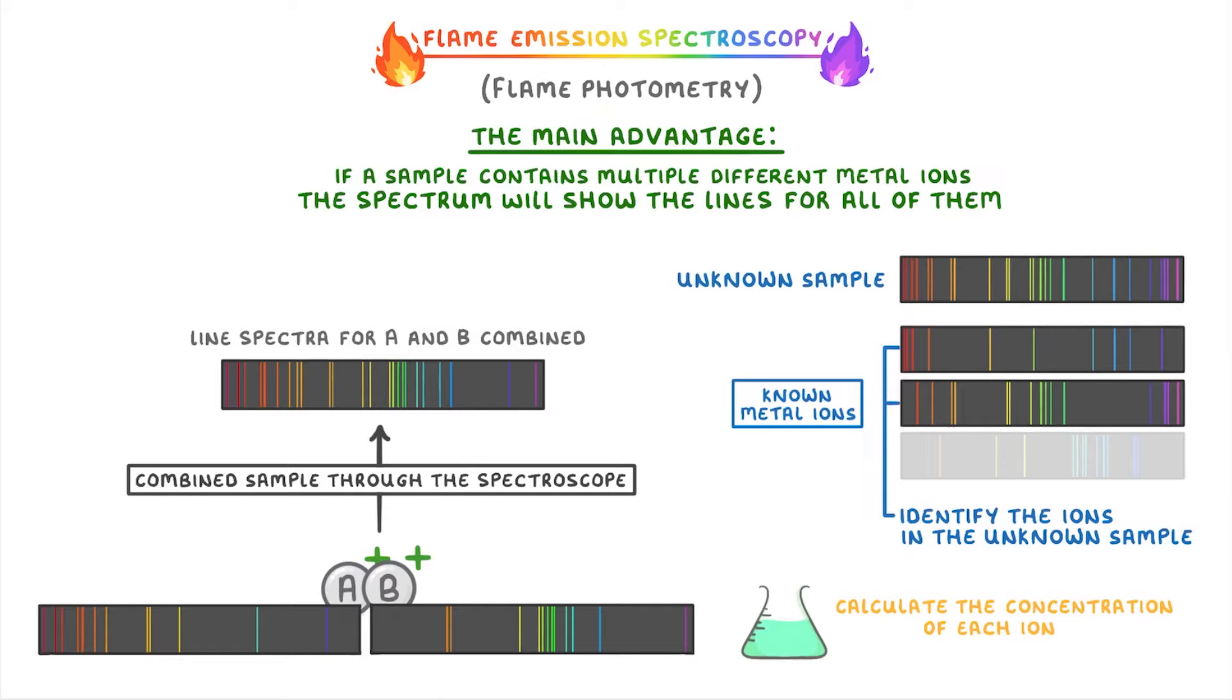So if you were asked to do this in your exams, you would just look for which metal ions have the same lines as the unknown sample does, and those would be the ions that are present in the unknown sample.